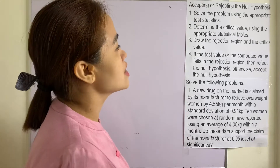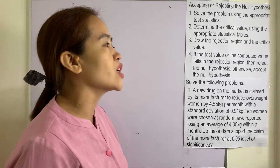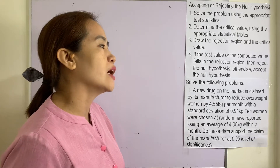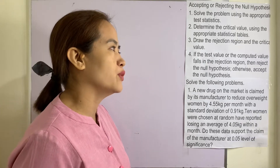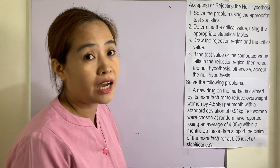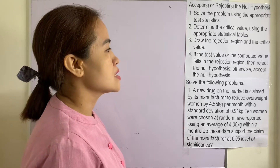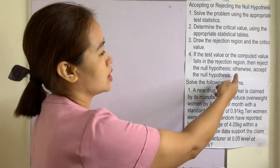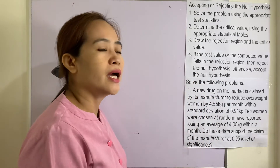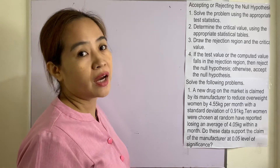Number four, if the test value or the computed value falls in the rejection region, then reject the null hypothesis. When we reject the null hypothesis, we accept the alternative hypothesis. Otherwise, accept the null hypothesis and reject the alternative hypothesis.